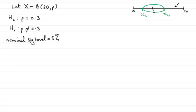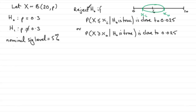So to summarize: we reject H0 if the probability of X being less than the lower critical value, given H0 is true (P equals 0.3), is as close as we can get to two and a half percent, or 0.025.